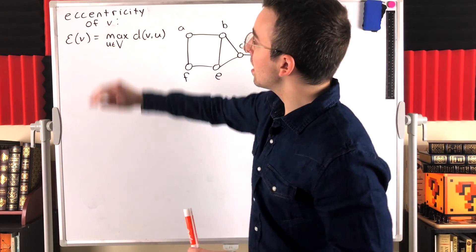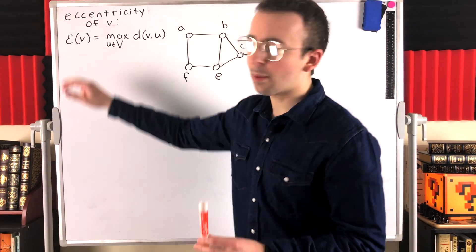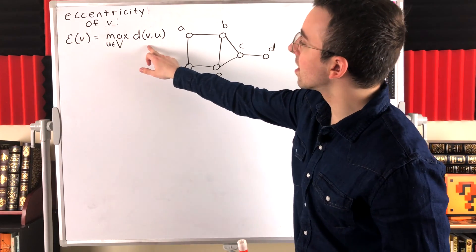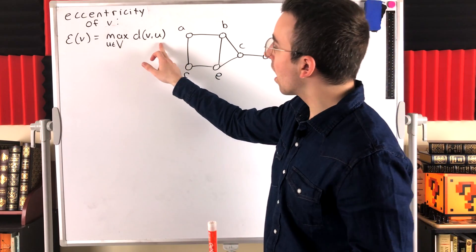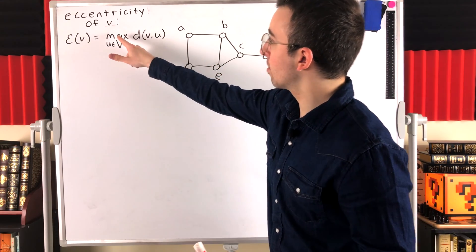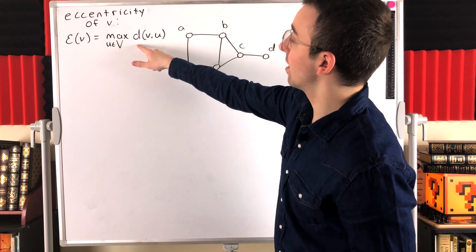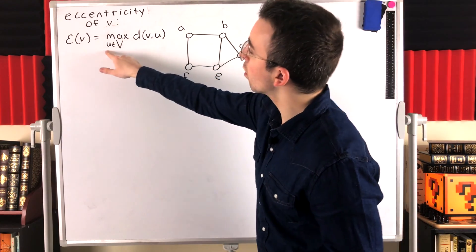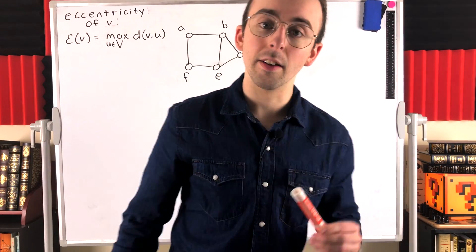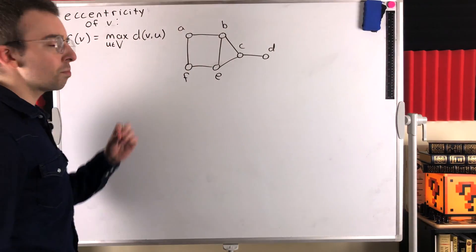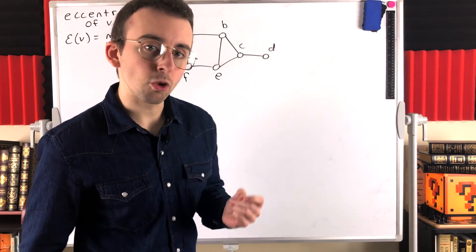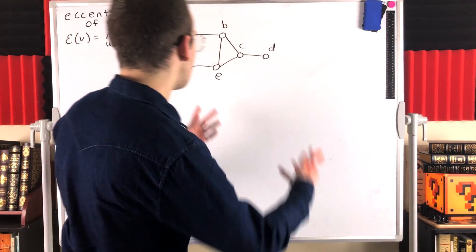The eccentricity of a vertex v, denoted epsilon of v, is the maximum distance between v and any other vertex in the graph. So that's the maximum of the distance between v and u, taken over all vertices u in the vertex set of the graph. Remember that the distance between two vertices is the length of a shortest path that connects them.